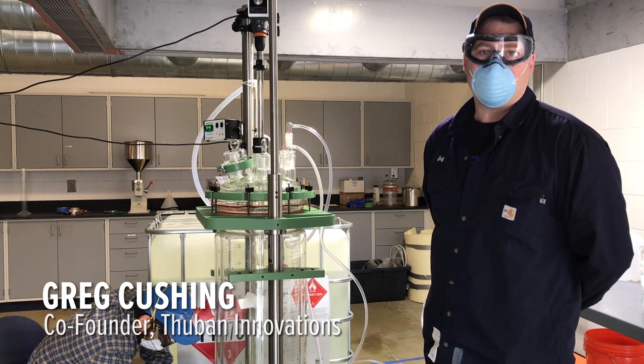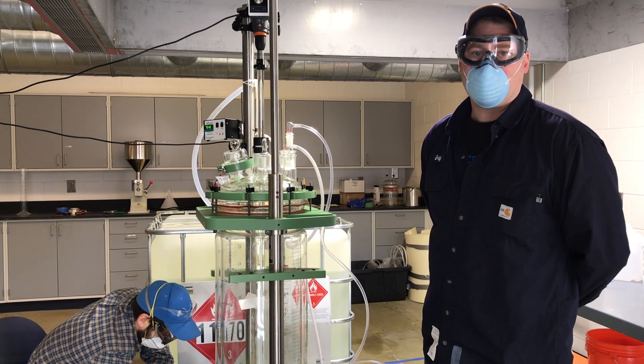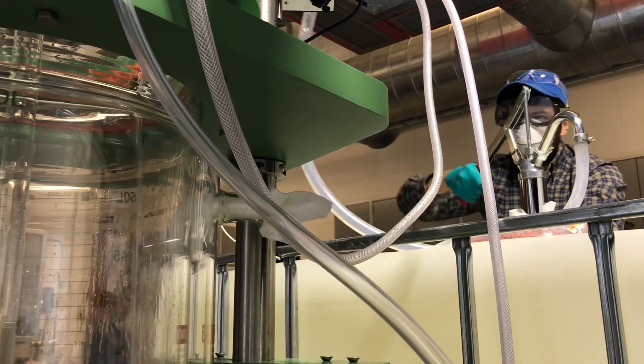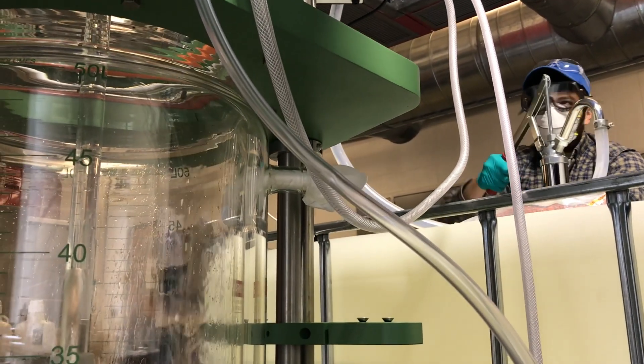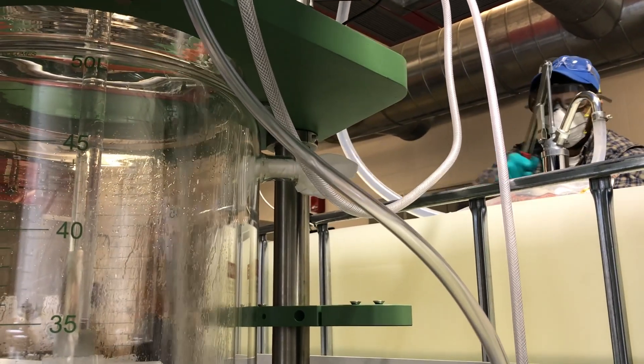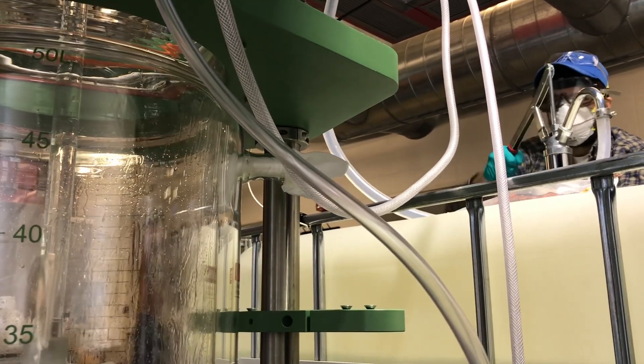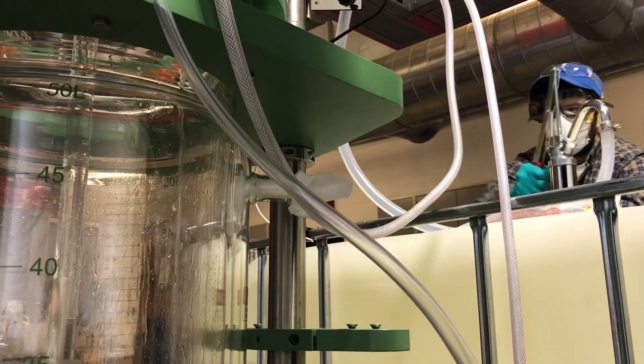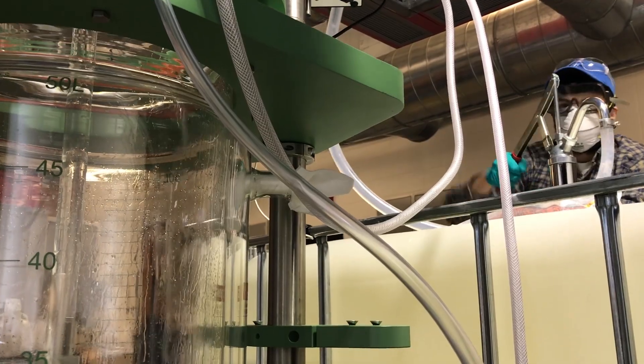We start with an empty vessel and fill the reactor with nitrogen gas to keep the flammability of the ethanol lower and ensure we don't have any safety issues.